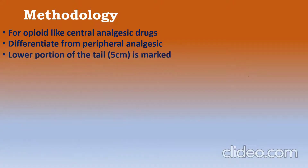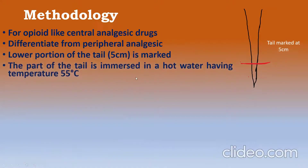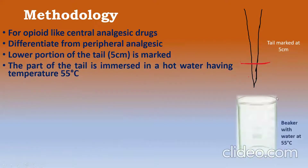In this test, you have to take the rat and the lower portion of the tail — up to 5 centimeters — is marked with a marker, as shown in the figure. Then this 5-centimeter portion of the tail is immersed in hot water having a temperature of 55 degrees centigrade.